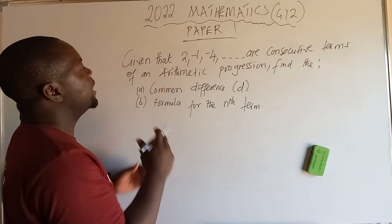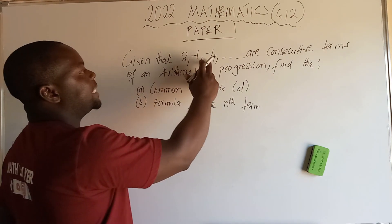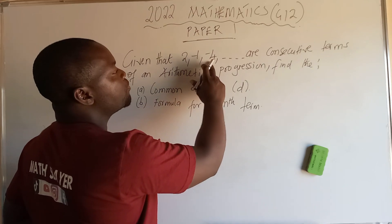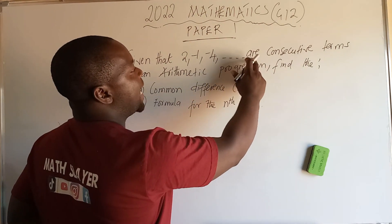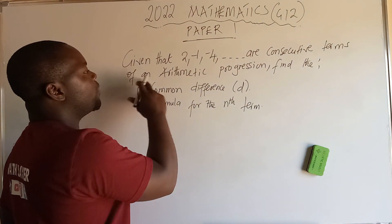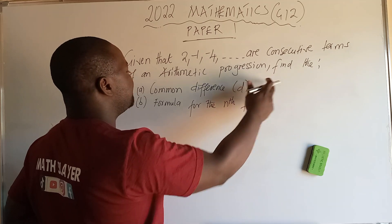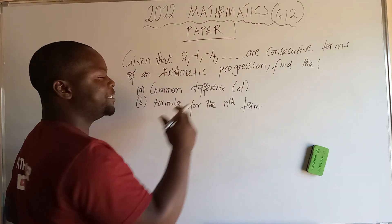Given that 2, negative one, negative four, and so on, are consecutive terms of an arithmetic progression, find the common difference.